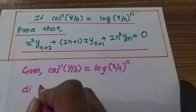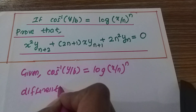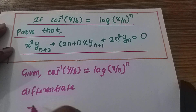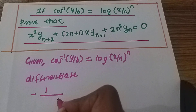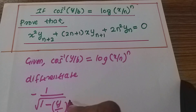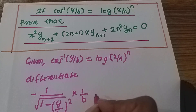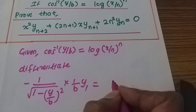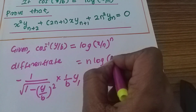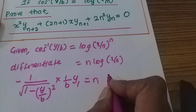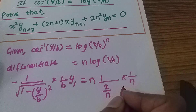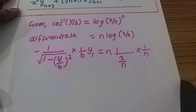Differentiating: cos inverse of y by b gives minus one by root one minus x square, applying the chain rule. For y by b, the chain rule applies: 1 by b constant, derivative of y is y1, equal to log property applied, giving 1 by x by n, and constant log 1 by x by n into chain rule, 1 by n constant, x by n.